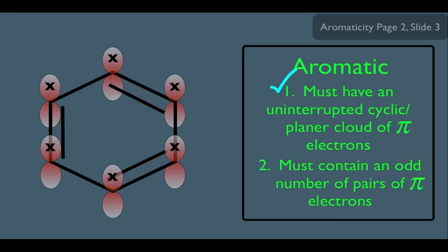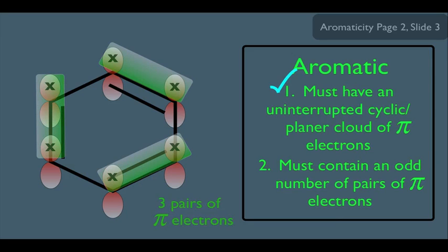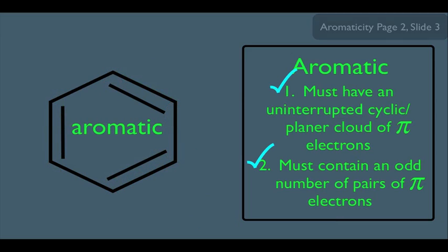So benzene definitely has an uninterrupted cyclic planar cloud of pi electrons. Now what about criterion two? It says it must contain an odd number of pairs of pi electrons. Let's look at the pairs here: this would be one pair, this would be another pair, and so would this — a total of three pairs of pi electrons. Three is an odd number, so benzene also meets the second criterion and is therefore considered an aromatic molecule.